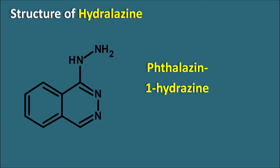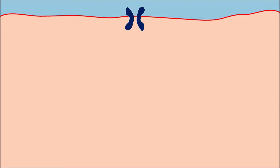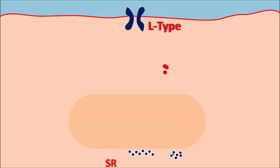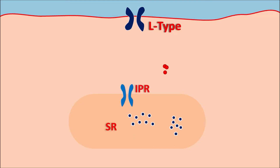Now let us see how this drug acts. At the vascular smooth muscle, calcium movement is controlled by different types of ion channels and receptors. One of the important calcium channels is the L-type calcium channels. Through these L-type calcium channels, calcium can enter into the vascular smooth muscle, which is responsible for contraction. Additionally, calcium molecules can be stored in the sarcoplasmic reticulum, from which calcium can also be released. To release calcium from the sarcoplasmic reticulum, few receptors must be expressed — one is the IP3 receptors, activated by inositol triphosphate.